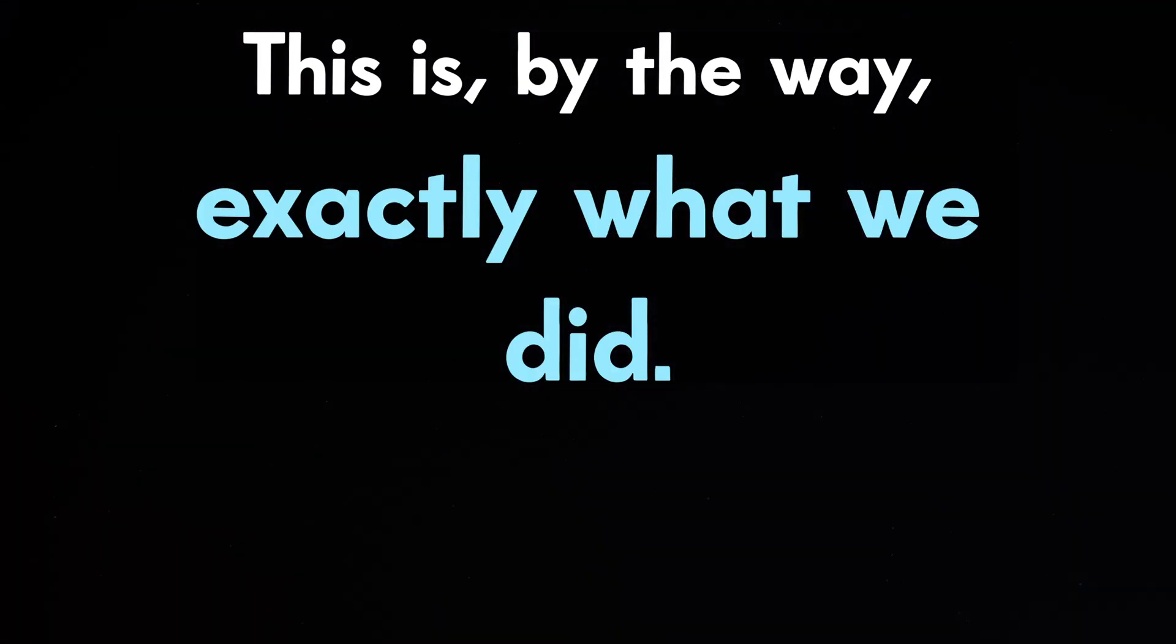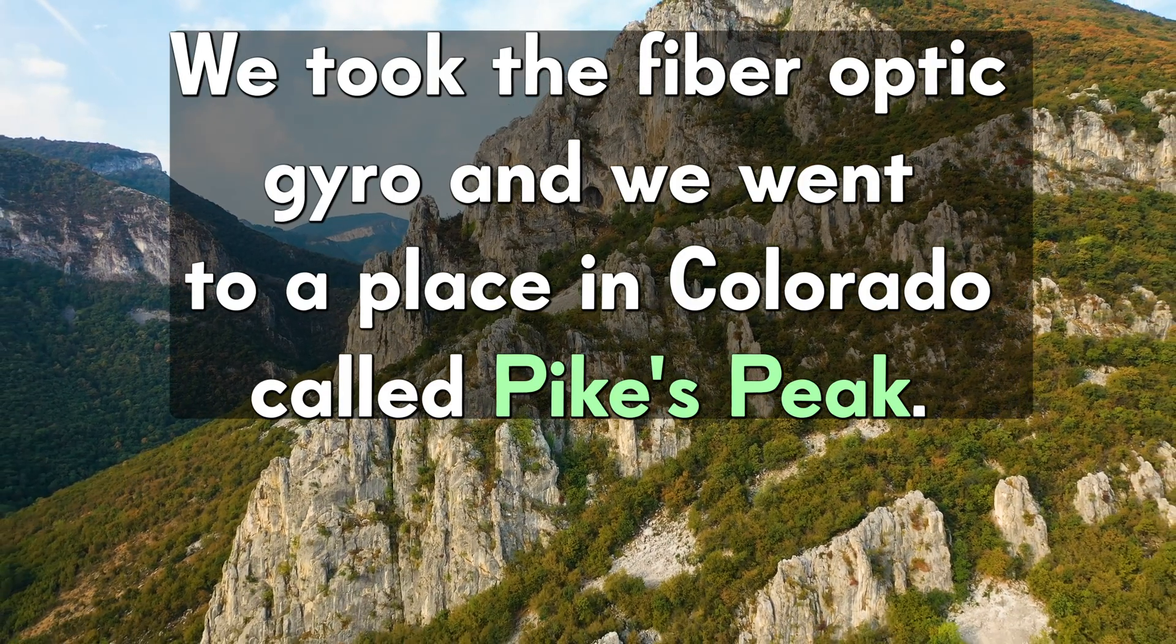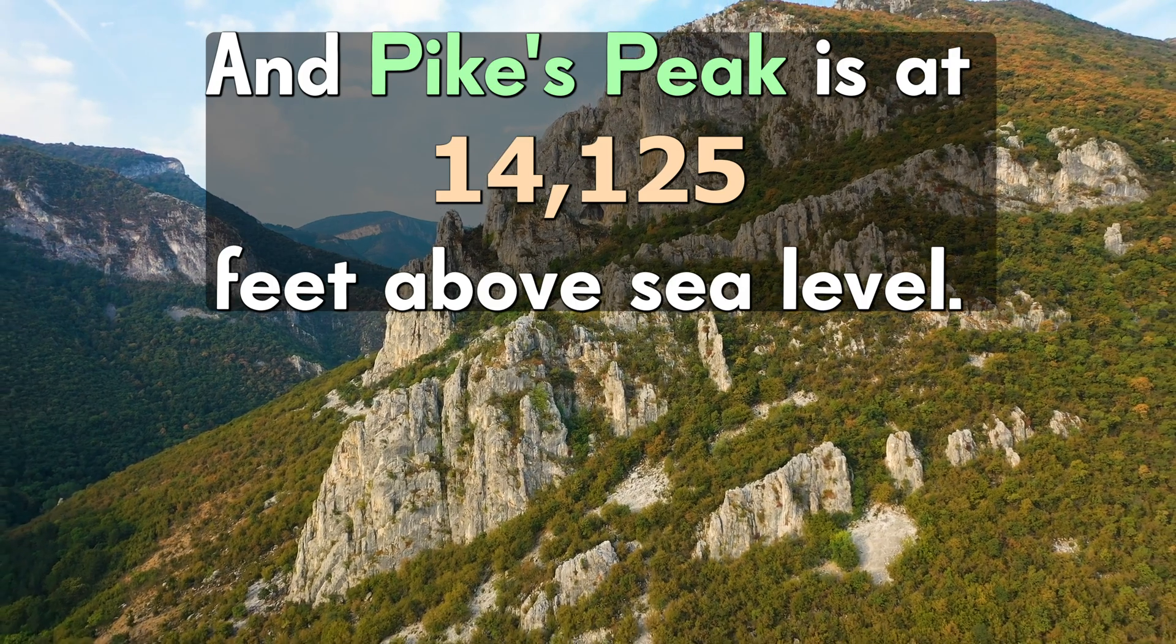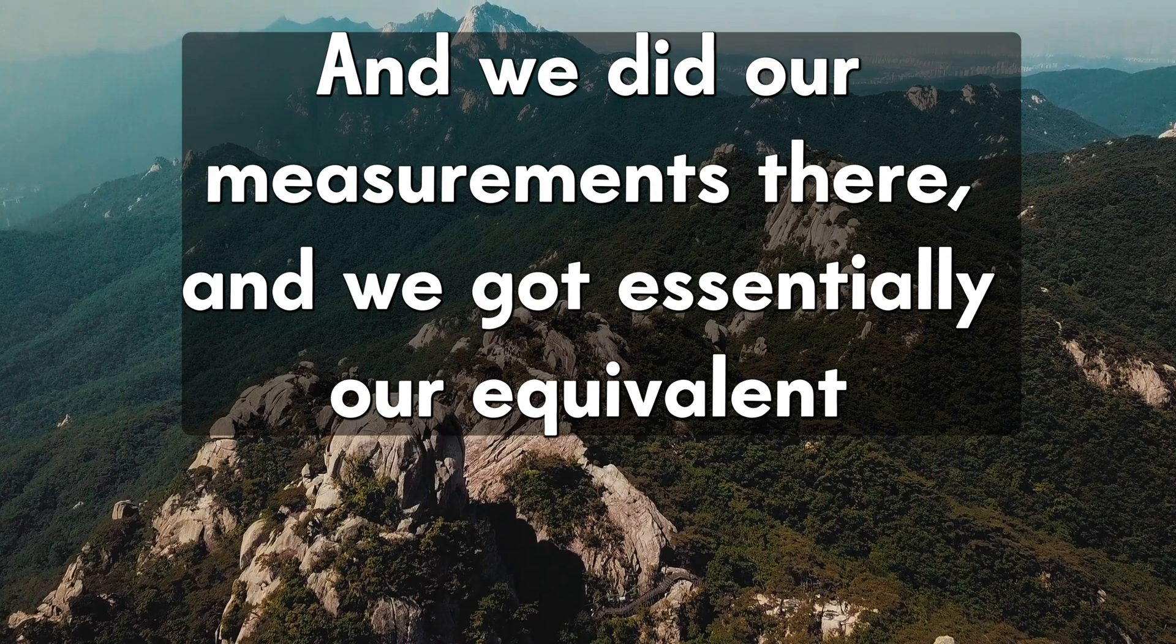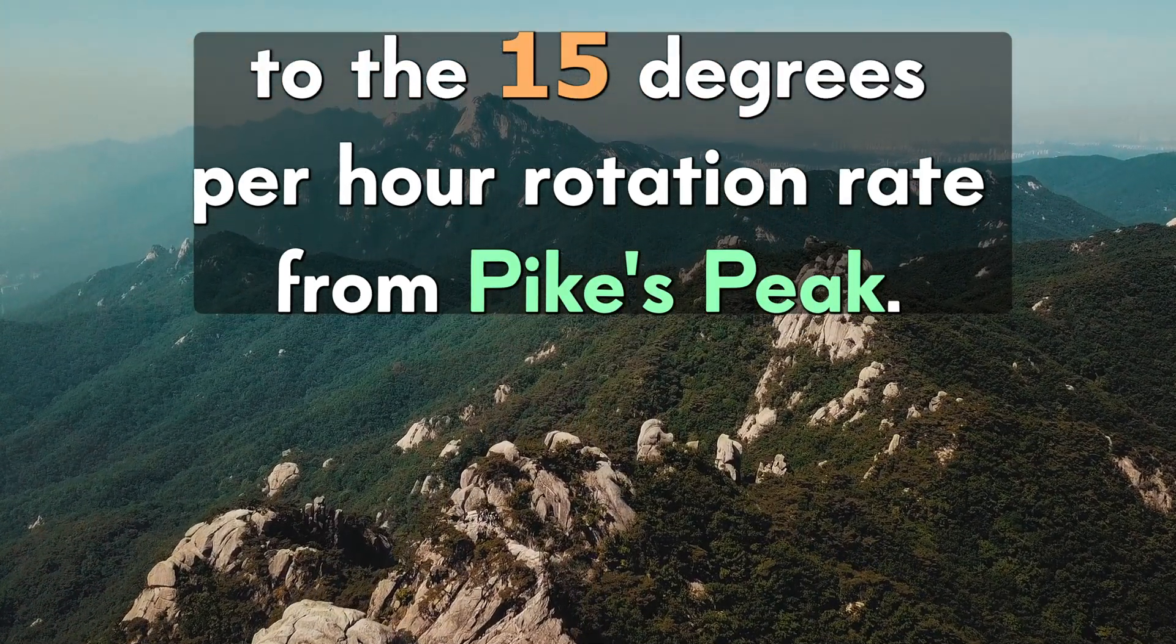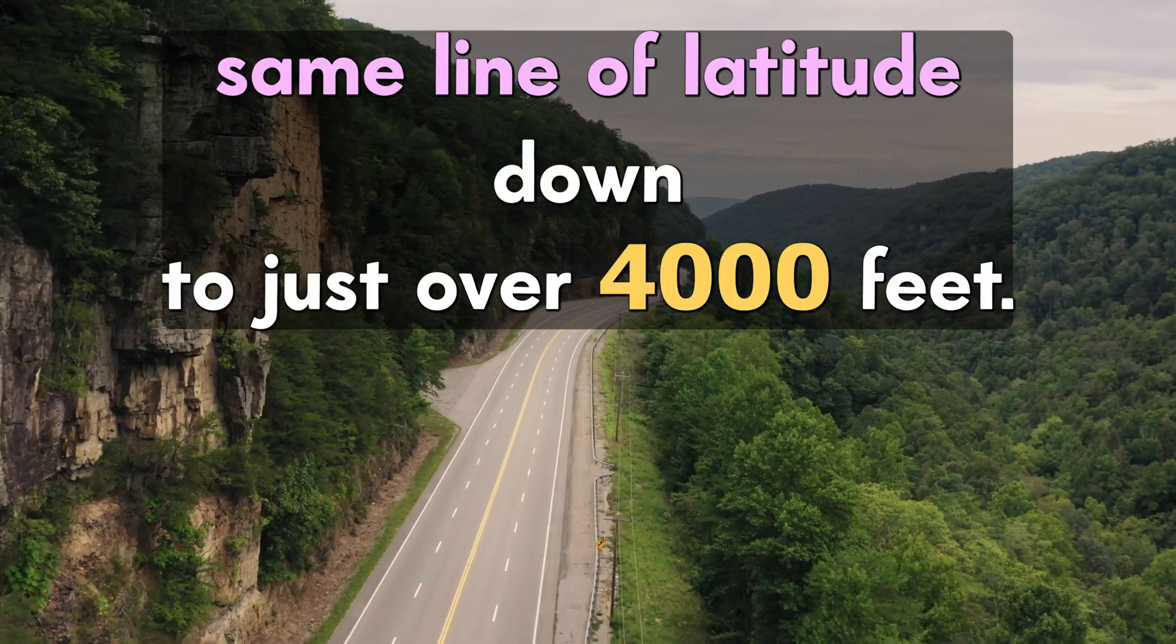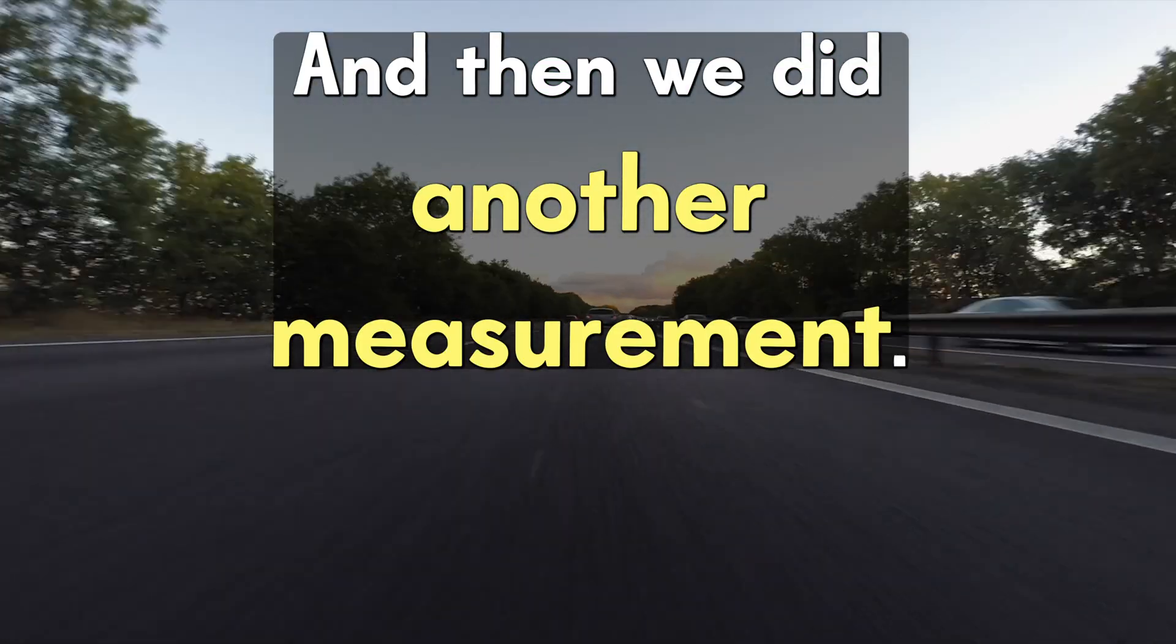How is it that we were able to figure that out and that it was not earth rotation? The answer is really quite simple. This is exactly what we did. We took the fiber optic gyro and we went to a place in Colorado called Pikes Peak. Pikes Peak is at 14,125 feet above sea level. We did our measurements there and we got essentially our equivalent to the 15 degrees per hour rotation rate. And then we went directly east in Colorado on the exact same line of latitude down to just over 4,000 feet. And then we did another measurement.